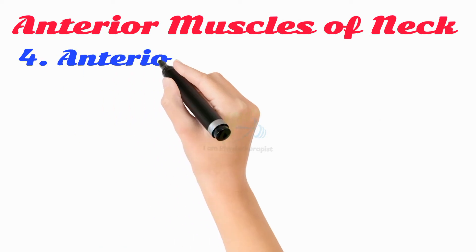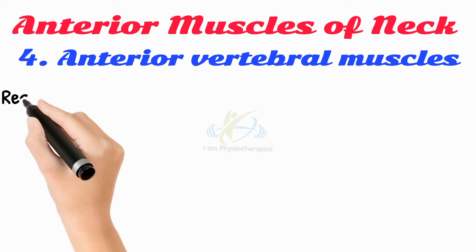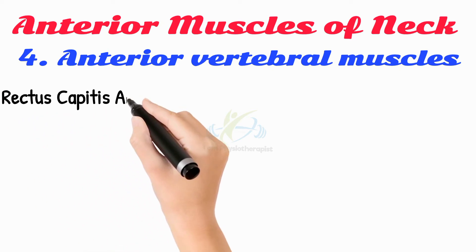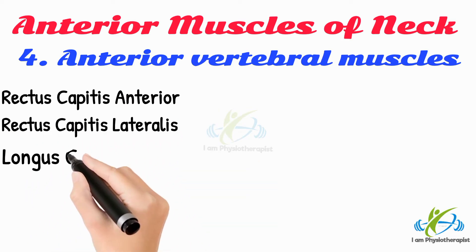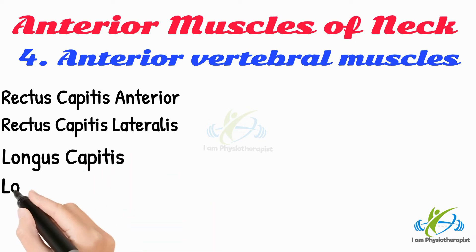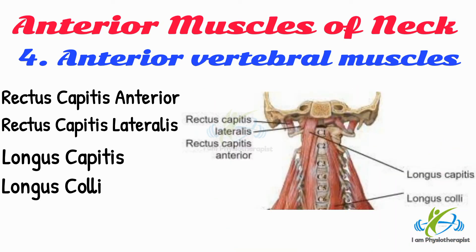The anterior vertebral muscles are a deep group of muscles located just anterior to the cervical vertebral column. These include the rectus capitis anterior, rectus capitis lateralis, longus capitis, and longus colli. These muscles are surrounded by the pre-vertebral fascia of the neck, which is why they are commonly referred to as pre-vertebral muscles. Their principal function is flexion of the head to varying degrees.